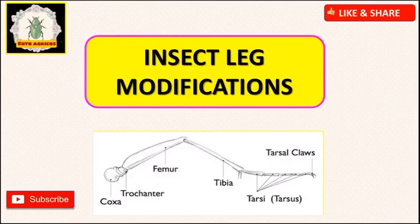In insects, the legs are variously modified to perform various functions. They are modified on the basis of the habitat or food habit of the insect, and they are used for a wide variety of functions. There are six segments in an insect leg, and based upon the purpose they serve, they are modified accordingly — coxa, trochanter, femur, tibia, tarsus, and pretarsus.